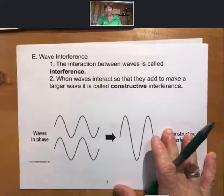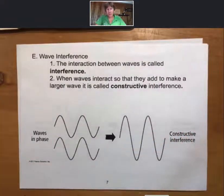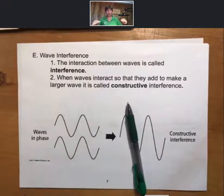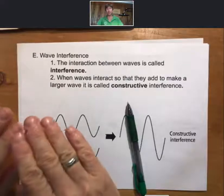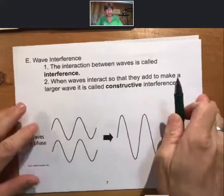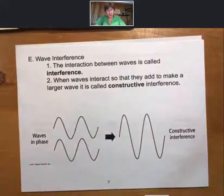Now waves are known to interfere. If you've ever been in the tub or the ocean, you know that waves traveling in different directions can interfere with each other. When waves interact so that they add to make a larger wave, it is called constructive interference.